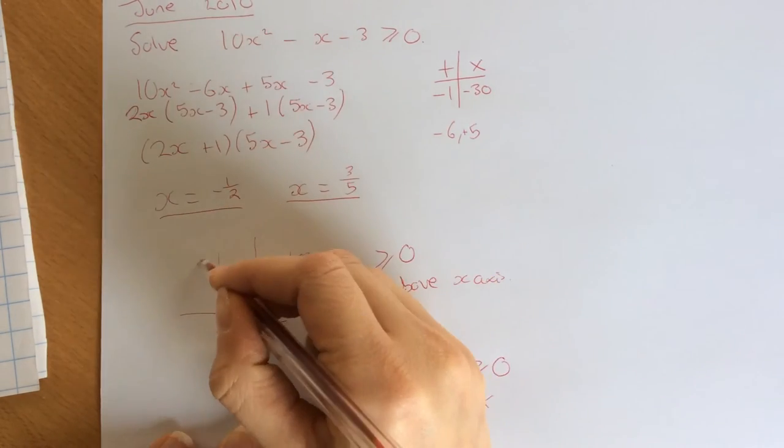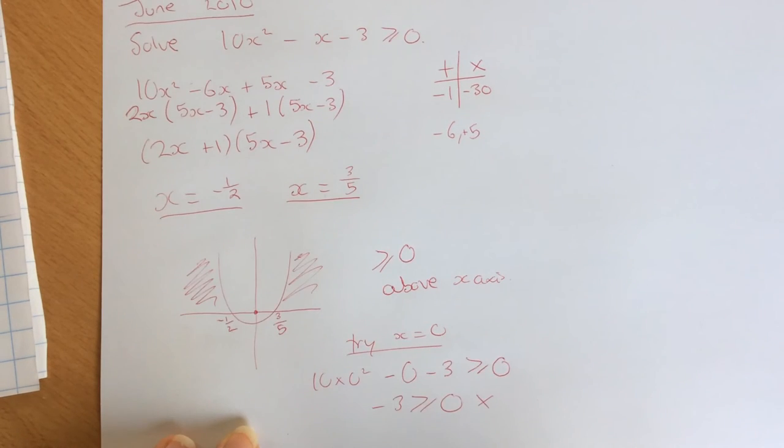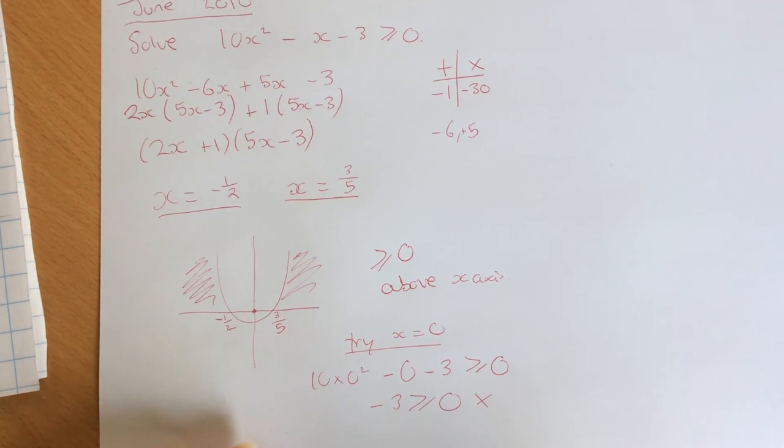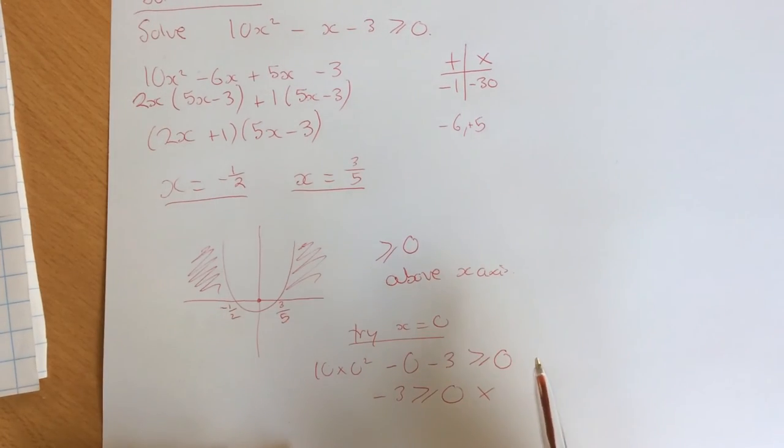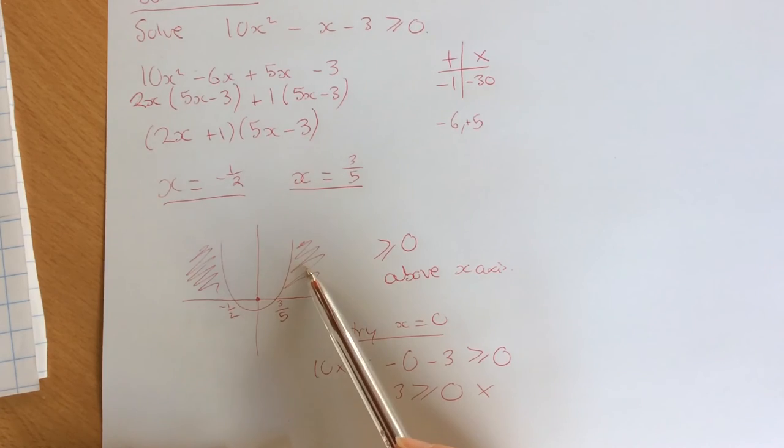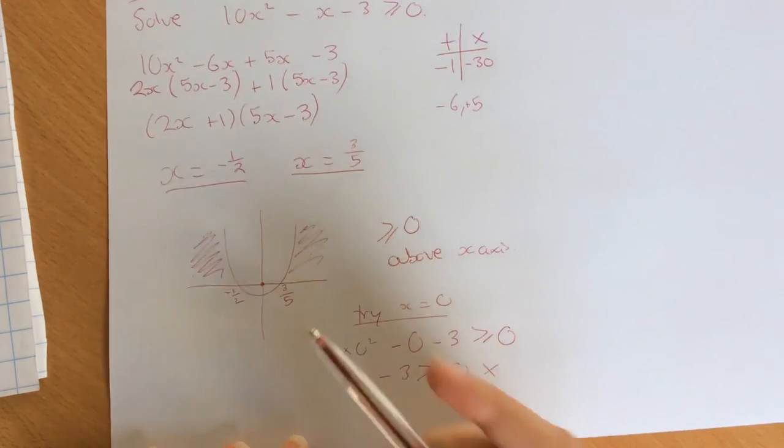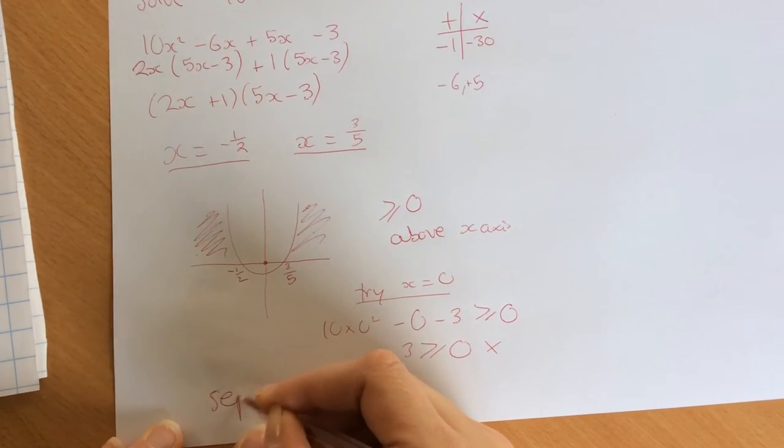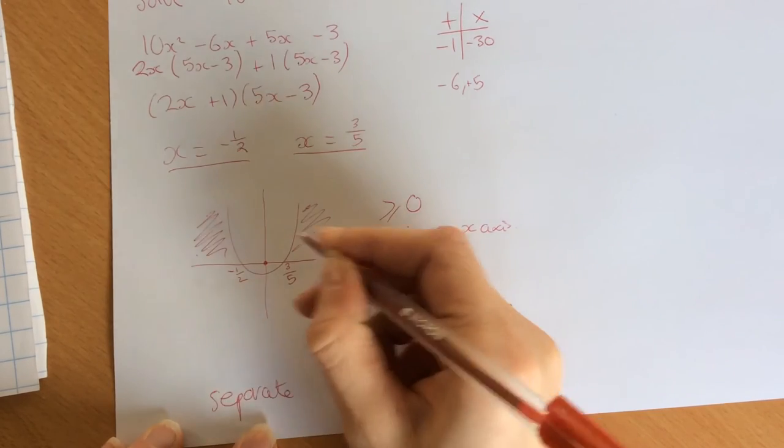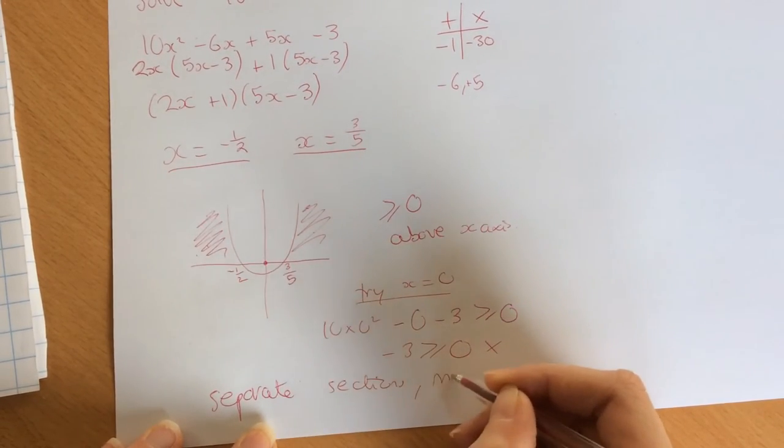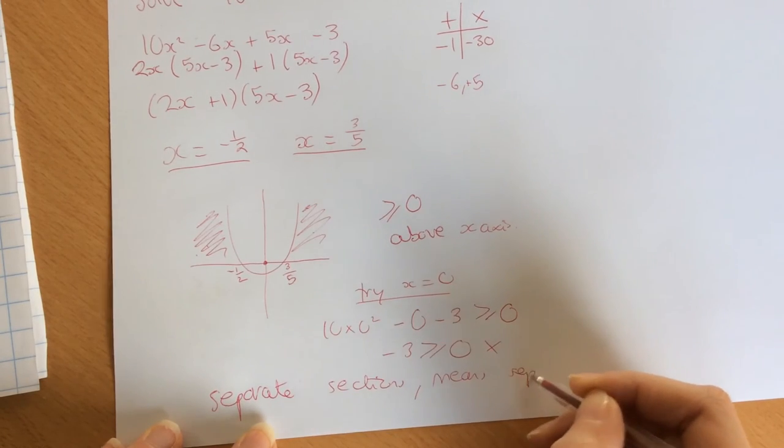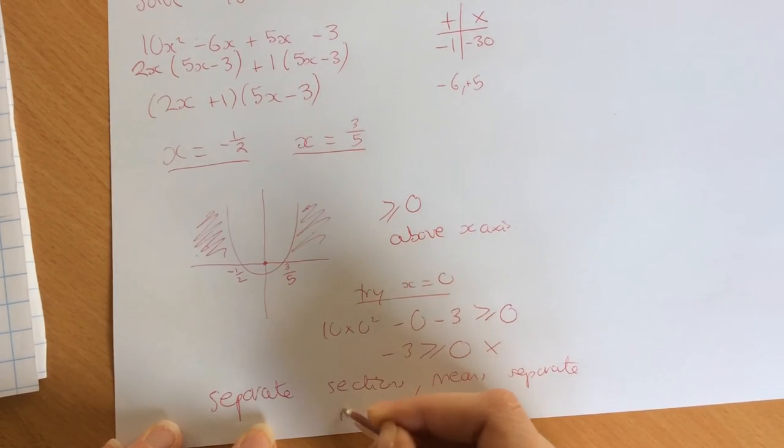The correct part will be this outside area there. So what you need to do to finish that one off, you can't just leave it shaded, you need to write the inequality. Separate sections like these means separate inequalities.